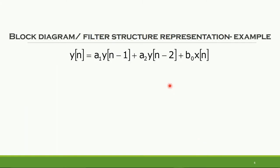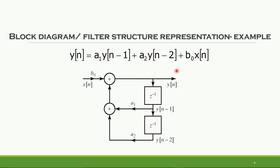Let us see an example of how to draw an IIR filter structure. In this difference equation, the output depends upon two past output samples and one present input sample. A and B denote the filter coefficients respectively. This expression can be drawn with the help of a block diagram as it comprises two delay units, two adder units, and three multipliers. Thus, we obtain an output Y of N: a present input getting multiplied by B0 filter coefficient, plus A1 into Y of N minus 1, plus A2 into Y of N minus 2.